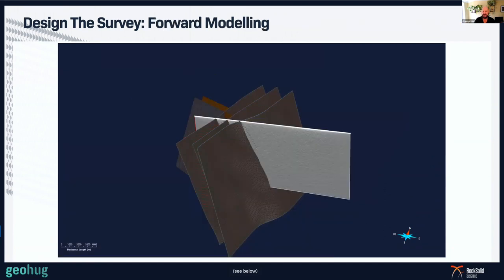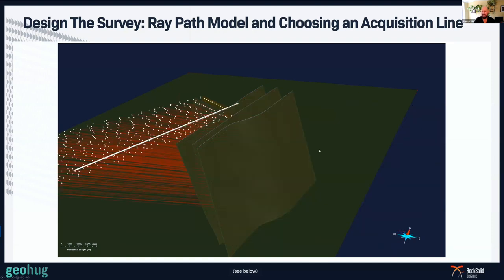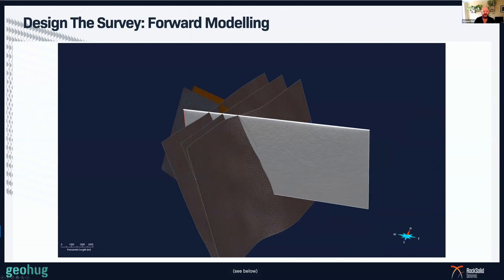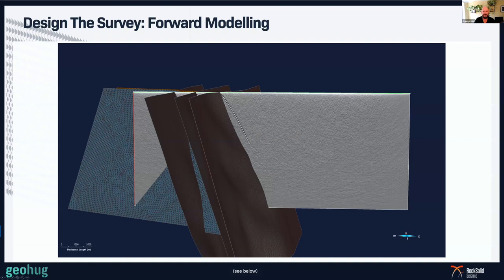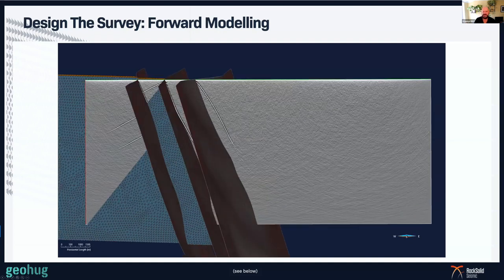In this project the faults are altered and hosting gold, so we'd choose the direction that gives us the best response for those faults — looking at ray paths coming out towards the east. Then we run a forward model to see what sort of response we're going to get from our assumed geological model. Thanks to Lunar Mining Corporation for letting me use this dataset — we can see we're getting responses in the direction we expected.